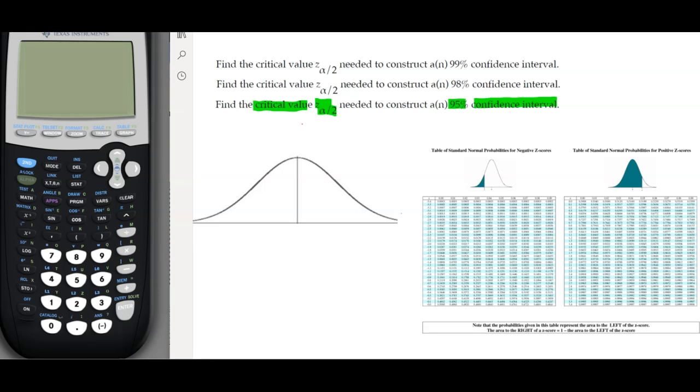There are a couple of things that we need to know before starting. Every time we are talking about the confidence interval, we are using a two-tailed distribution, which means we're going to have a tail from the right side and another tail from the left side.